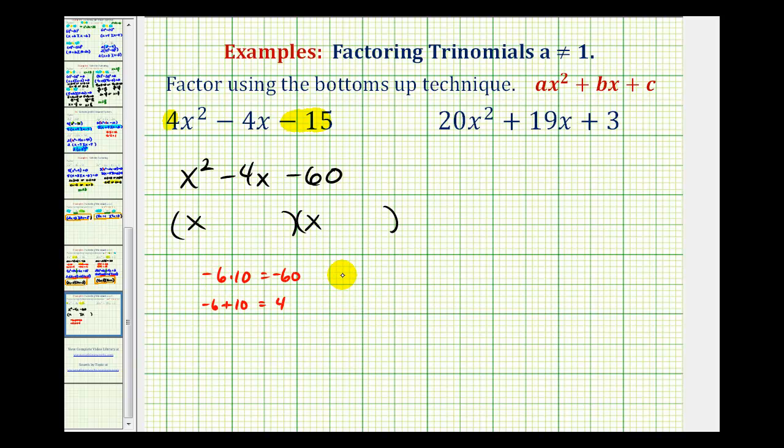So if we switch the signs of these two factors and use negative ten and positive six, we get the correct product and the correct sum. So we'll have x minus ten and x plus six.